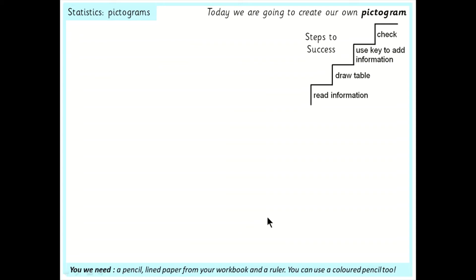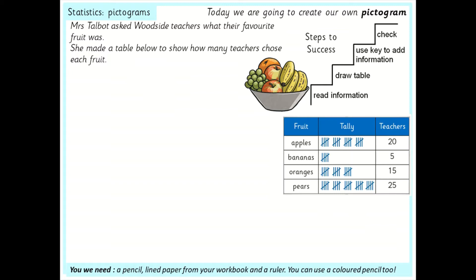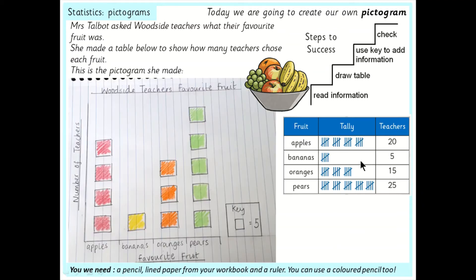Now I'm going to show you my pictogram first. I asked some Woodside teachers what their favourite fruit was and made a table to show how many teachers chose each fruit. I've got apples, bananas, oranges, and pears, and I made a tally — every time a teacher told me their favourite fruit I gave them a line. Remember, we group tallies in fives as it makes them easier to count, and I did the total here. I'm going to use this table to create a pictogram.